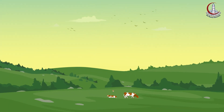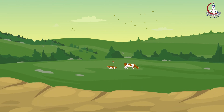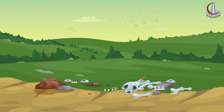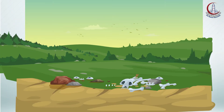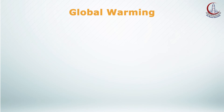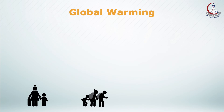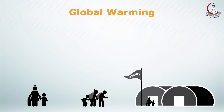When plants die, animals lose an important source of food along with their habitat. Although animals have a better ability to adapt to what happens than plants do, they may die also. When plants and animals die, people lose two main sources of food — plant food and animal food. They may also lose their homes. As a result, they would also have to leave the area or die.